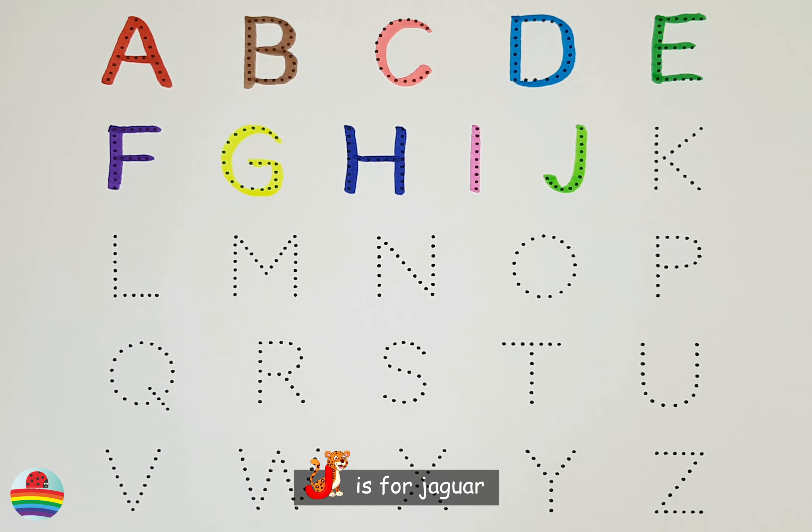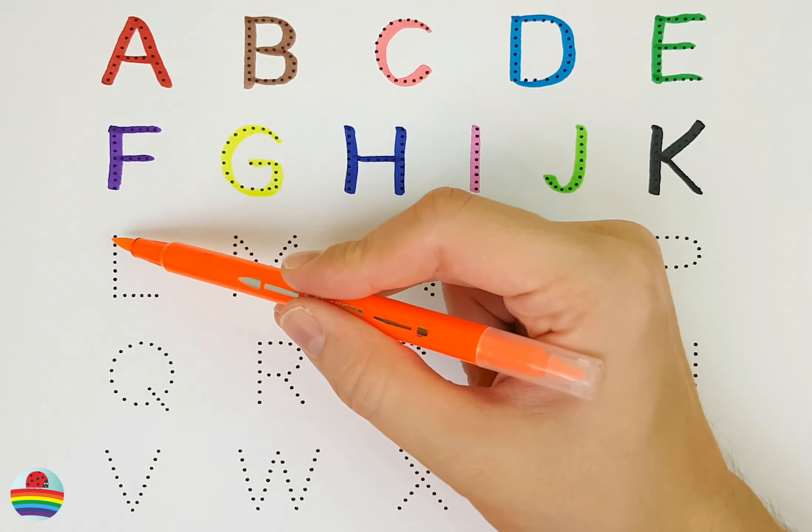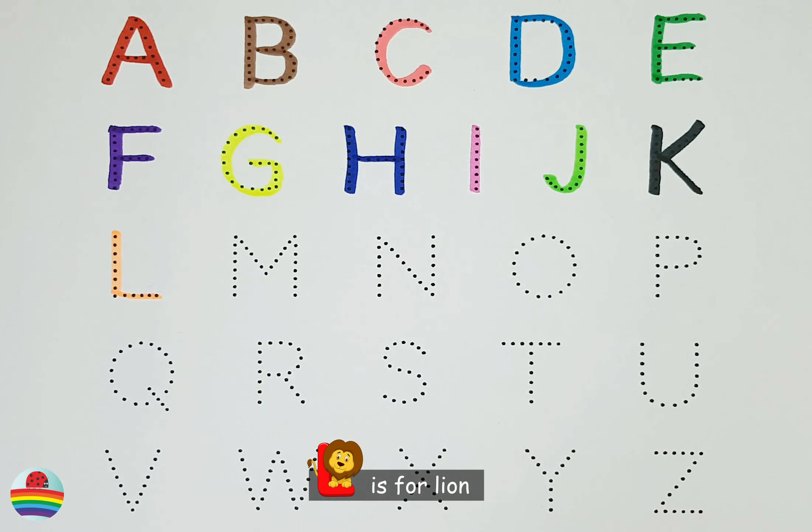J. J is for Jaguar. K. K is for Koala. L. L is for Lion.